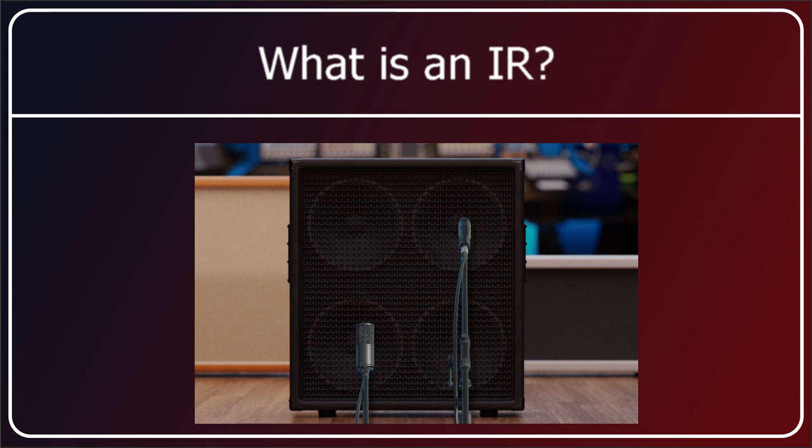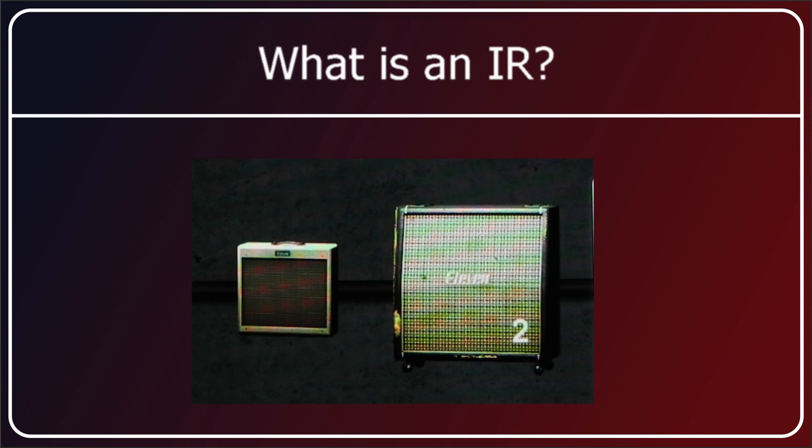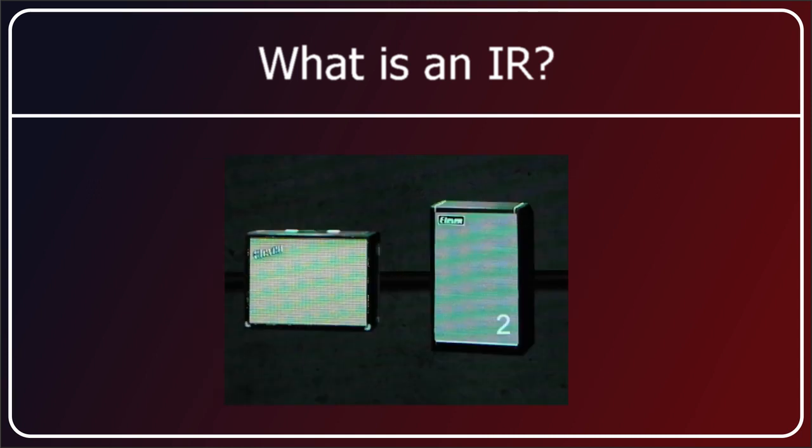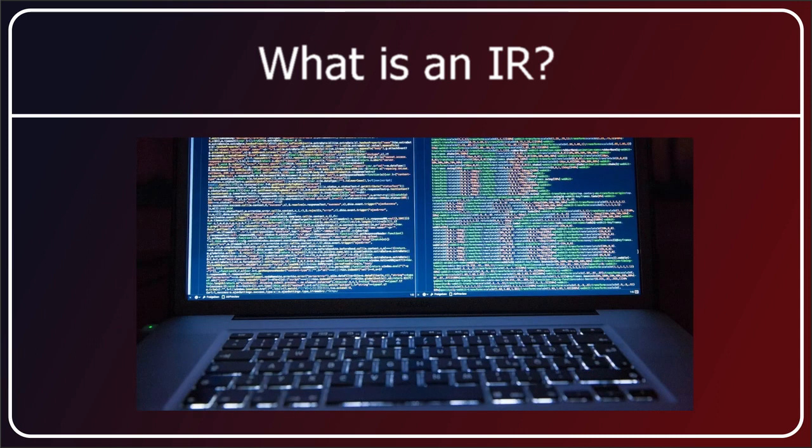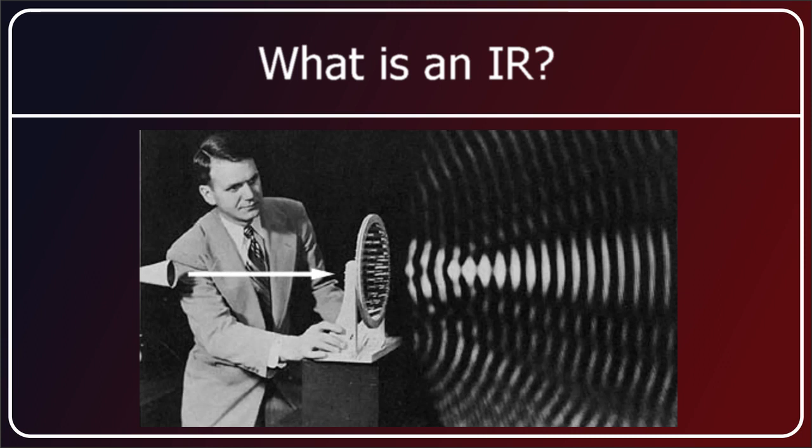Your modeler probably comes with what people call stock cabs. A stock cab is not an IR. It's an emulated speaker cabinet which is made the same way that the emulated amplifier is made. It's a digital recreation of a real physical item, whereas an IR is a digital measurement of a physical item.